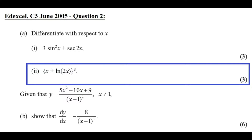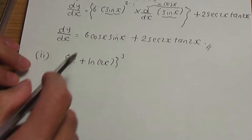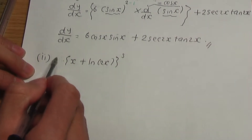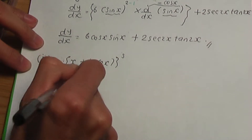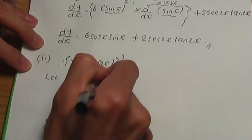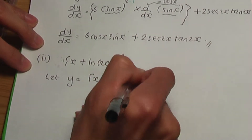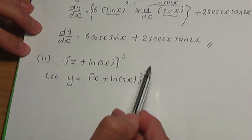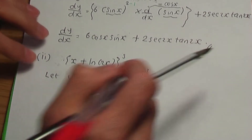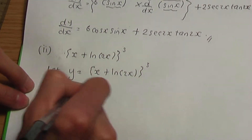So we have another one to differentiate. In part 2 of A, we need to differentiate x plus ln 2x to the power 3. Let's go to the paper and pen. Once again, the term in front of your bracket is a constant, and if you have a power, we need to use the chain rule again. So let me let y equal x plus ln 2x raised to the power 3. Here's the chain rule again to work out dy/dx.